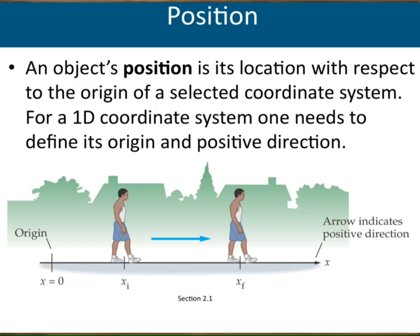The coordinate system in this chapter is only a straight line, which we call the X axis — it shows position. The numbers on this line are position information with respect to the origin. Once you draw your axis, you have to pick an origin. Without specifying your origin, you cannot measure distances or the position of an object. So we set up a zero position, and we measure all positions and displacements with respect to this origin.